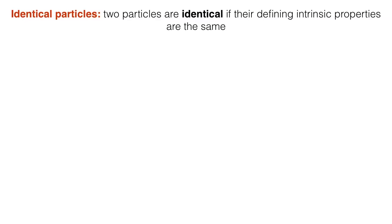Let's start with the definition of identical particles. Two particles are identical if their intrinsic defining properties are the same. So what do I mean by intrinsic properties? These are the properties that you list when you want to characterize the type of particle and include things like its mass, its charge, its spin, or its magnetic moment.